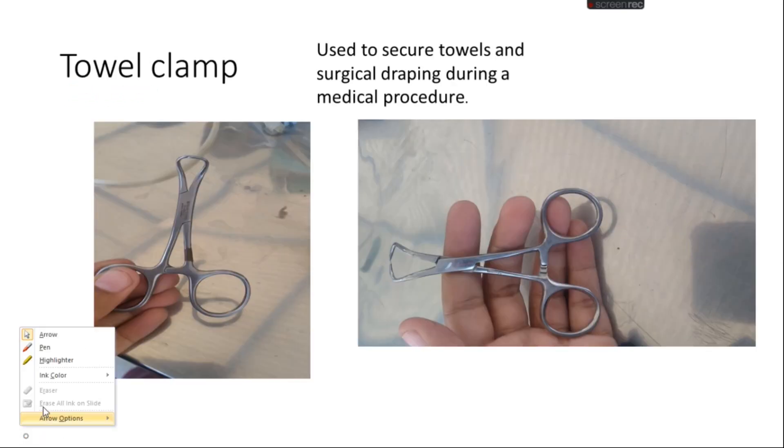Towel clamps are surgical instruments used to secure towels or surgical draping during medical procedures. For example, we have to cover the animal with towels.